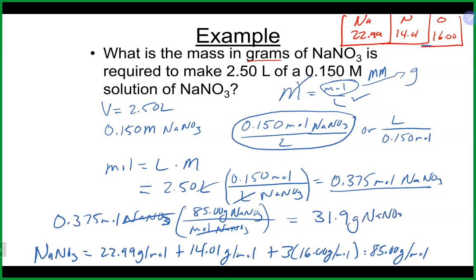Using dimensional analysis, we set up moles on the bottom and 85 grams on top. The moles cancel, and 85 times 0.375 gives us 31.9 grams of sodium nitrate. That means if you wanted to make this solution, you'd weigh out about 31.9 grams of sodium nitrate, dissolve it in water, and fill up to about 2.5 liters total volume to get a 0.15 molar solution. I recommend using dimensional analysis so you can see all the units and won't miss any.